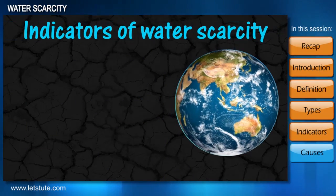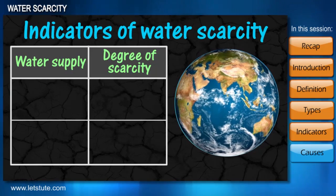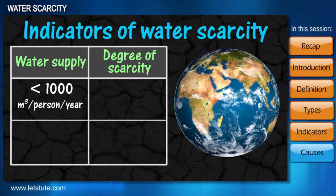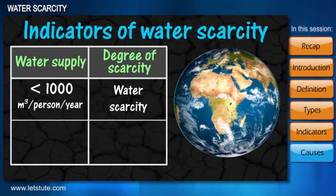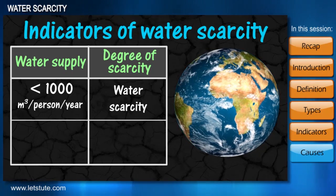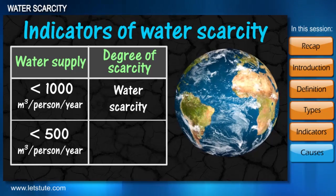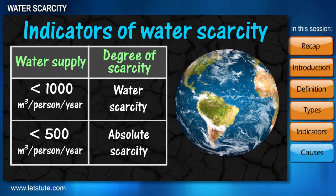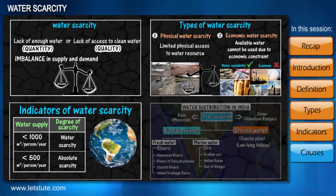When water supplies drop below 1,000 cubic meters per person per year, a country faces water scarcity. When water supplies drop below 500 cubic meters per person per year, the country faces absolute scarcity. With this, the concept of water scarcity should now be clear.